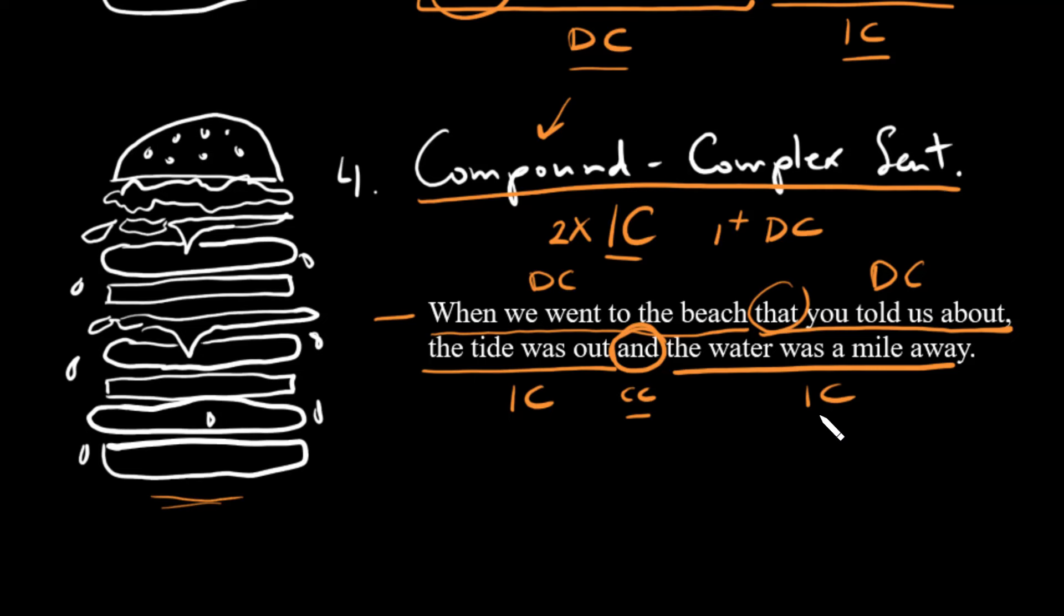We have two independent clauses, and we have at least one dependent clause. In fact, we have two. So that's it in terms of the menu when it comes to sentences.